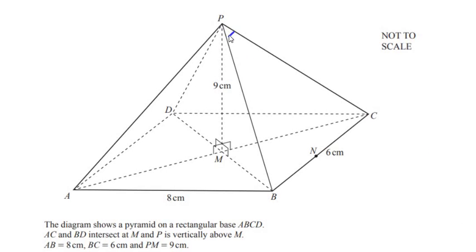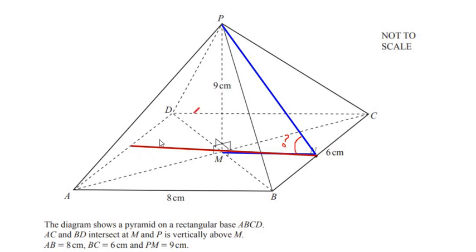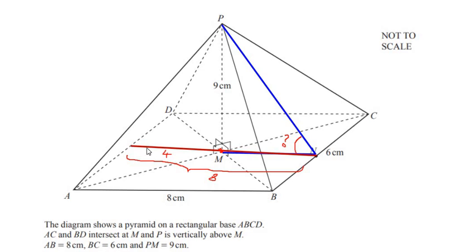They want us to calculate the angle PNM. If I draw a line passing from N to M and to the end of this rectangular base, we can see that AB is the length and CD is also the length. Since N is the midpoint and M is the point of intersection of the two diagonals, it divides this length into two equal halves. Since this represents the length 8, point M divides the length into 4 centimeters on one side and 4 centimeters for MN.